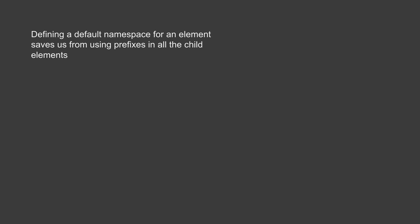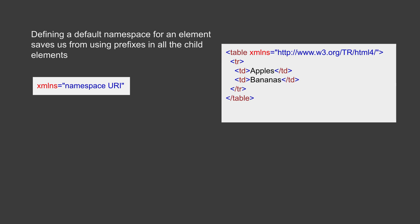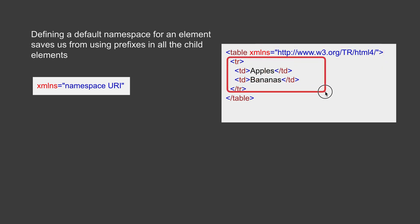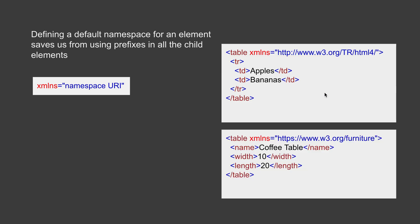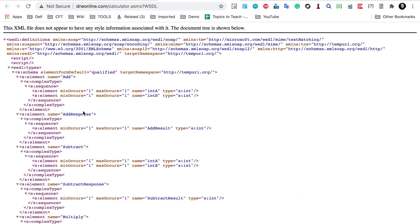Now we need to understand about default namespaces. If you define a default namespace for an element, all the child elements will be associated with that namespace, and it will save us from using prefixes in all the child elements. The way we do it is: we say xmlns equals a namespace URI. Here you can see an example where I have added the xmlns attribute and all the child elements are now associated with that XML namespace without needing any prefixes.